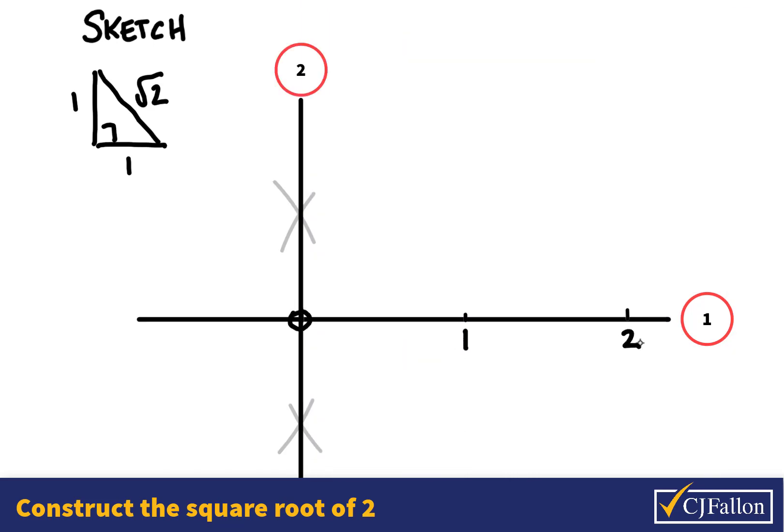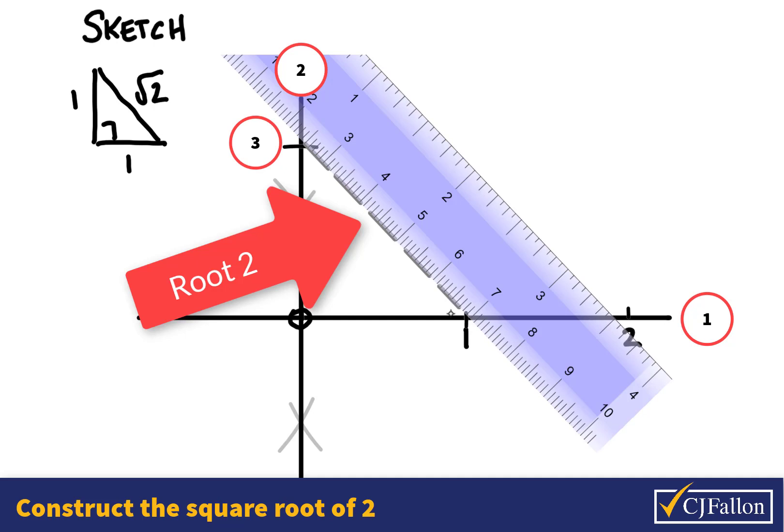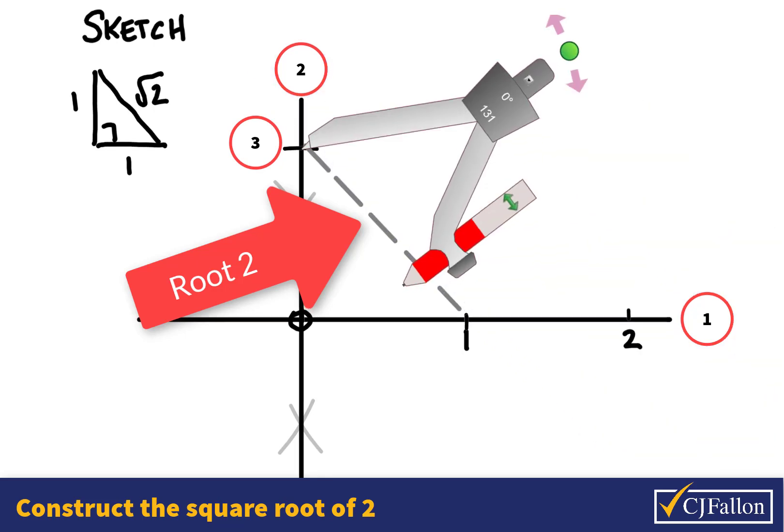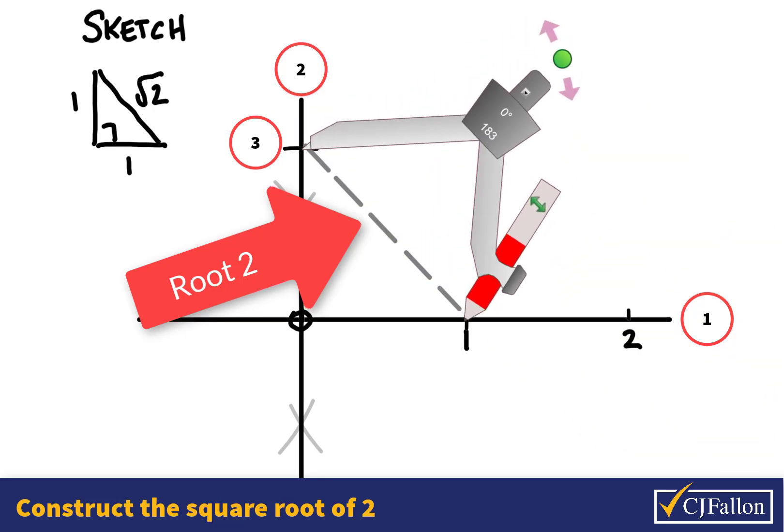I'm going to mark off my lengths 0, 1 and 2 along the number line. Now if I use the compass, I can mark a length of 1 along the vertical as well as the horizontal. Now this distance along here really has created our triangle. So this is a distance of root 2.